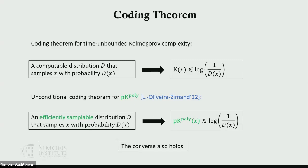In joint work with Igor Oliveira and Marius Zimand, we get an unconditional coding theorem for pk-poly. If there's an efficiently sampled distribution D that samples x with probability D(x), then we can say that the pk-poly complexity of x is at most log 1 over D(x). We can also show a converse, so the efficient sampleability of a string corresponds exactly to its pk-poly complexity.